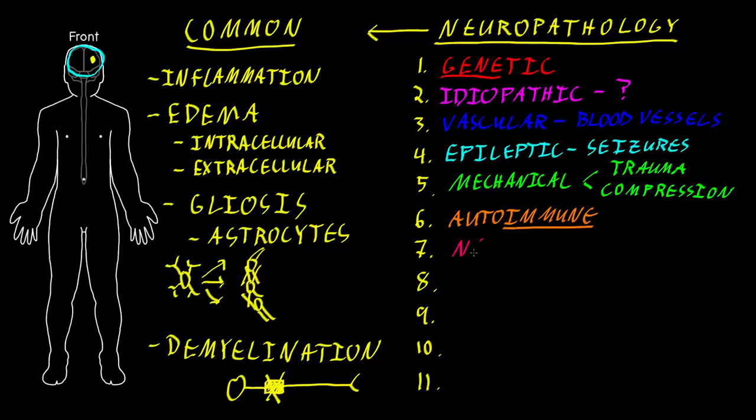The next category I call neoplastic. This involves tumors, which are where the body's own cells, or a population of the body's cells, starts dividing inappropriately and forms tumors. Neural cells themselves may become neoplastic and form tumors, particularly these astrocytes that are involved in gliosis.